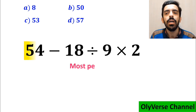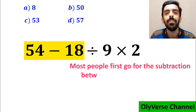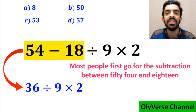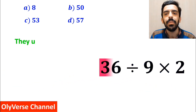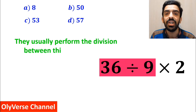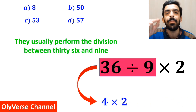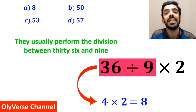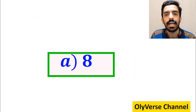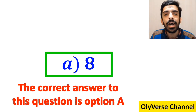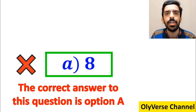To solve this question, most people first go for the subtraction between 54 and 18, and they rewrite this expression as 36 divided by 9 times 2. In the next step, they usually perform the division between 36 and 9, simplifying this expression to 4 multiplied by 2, which finally gives them the answer 8. They quickly say that the correct answer is option A. However, this answer is actually incorrect.